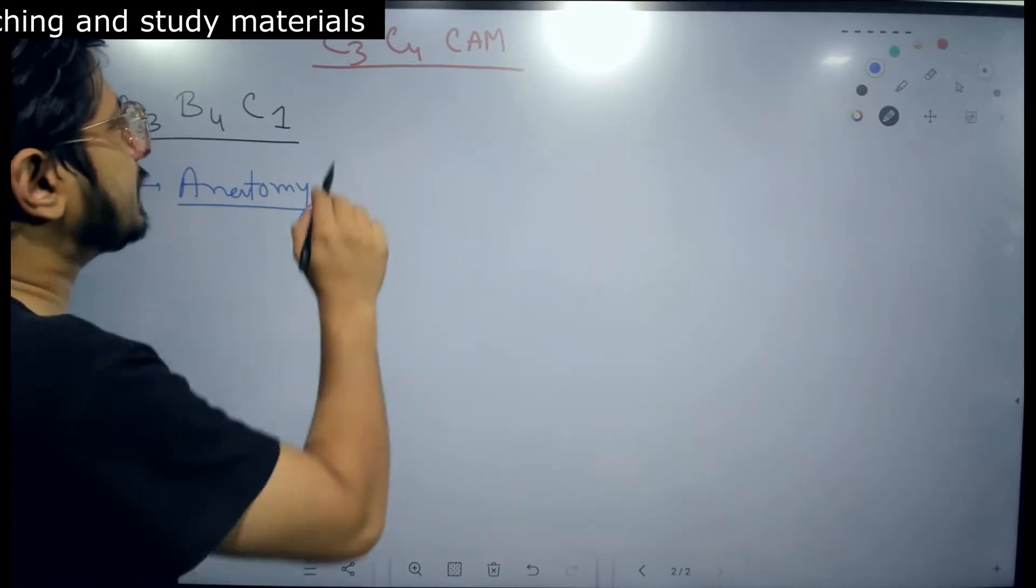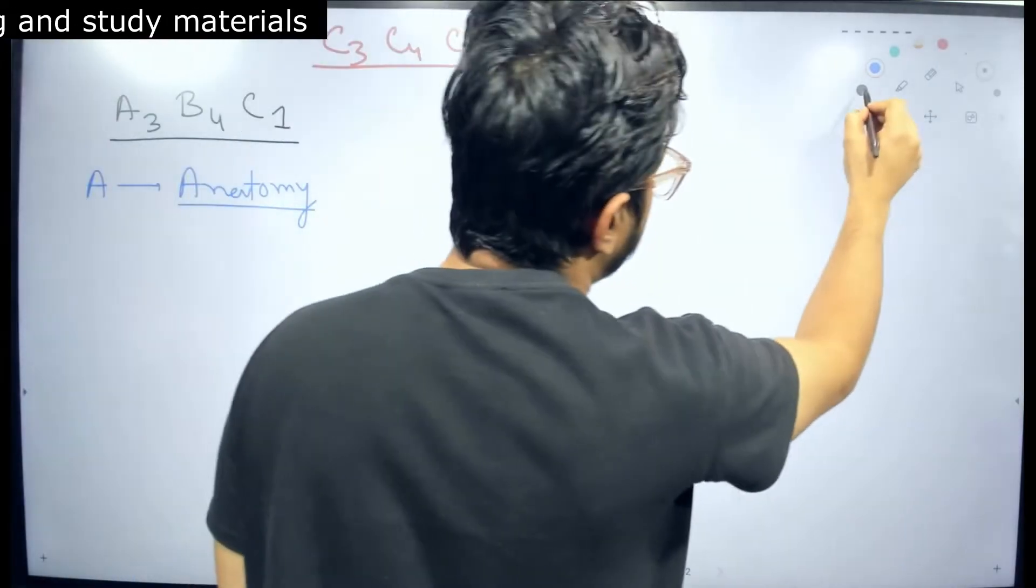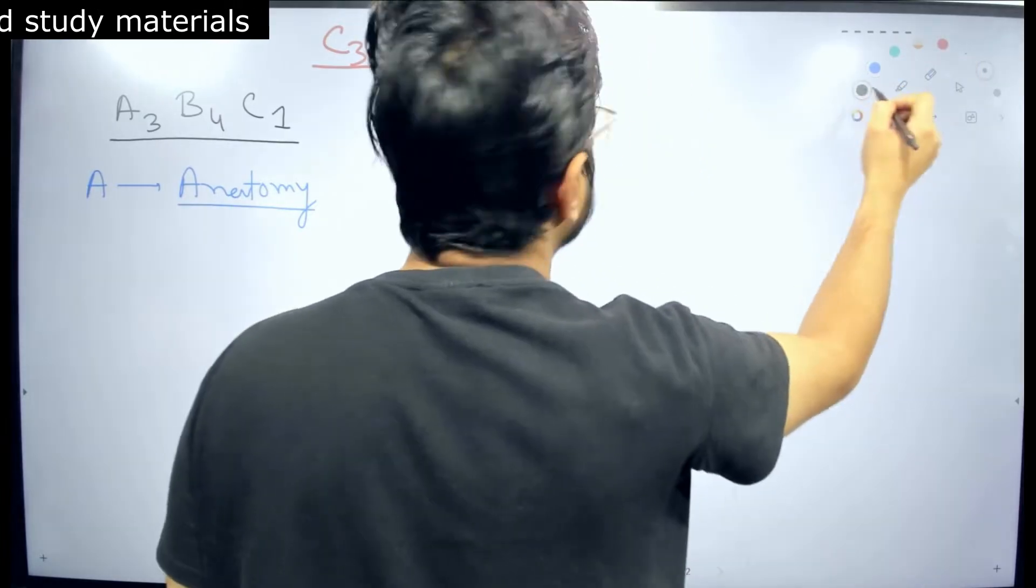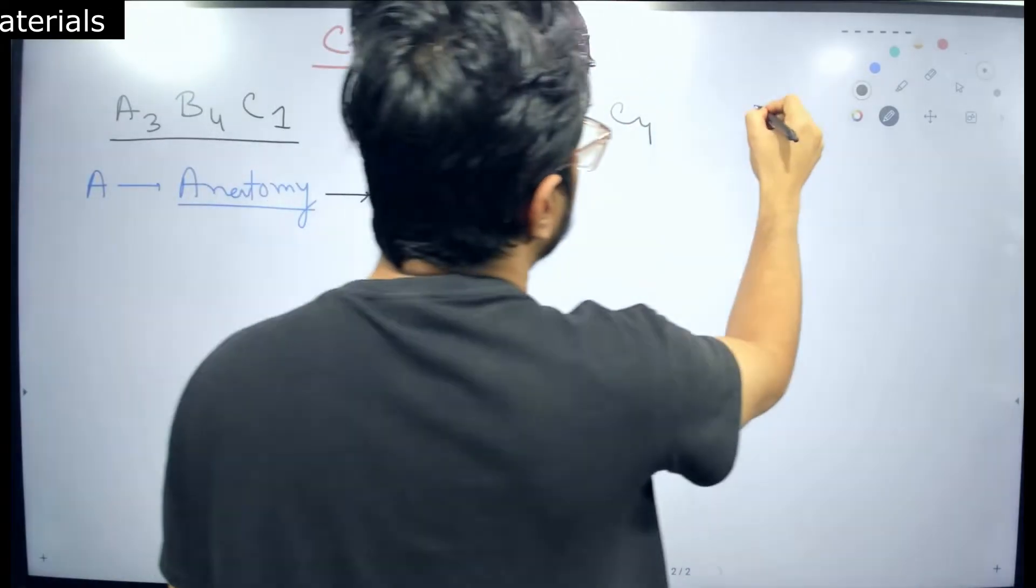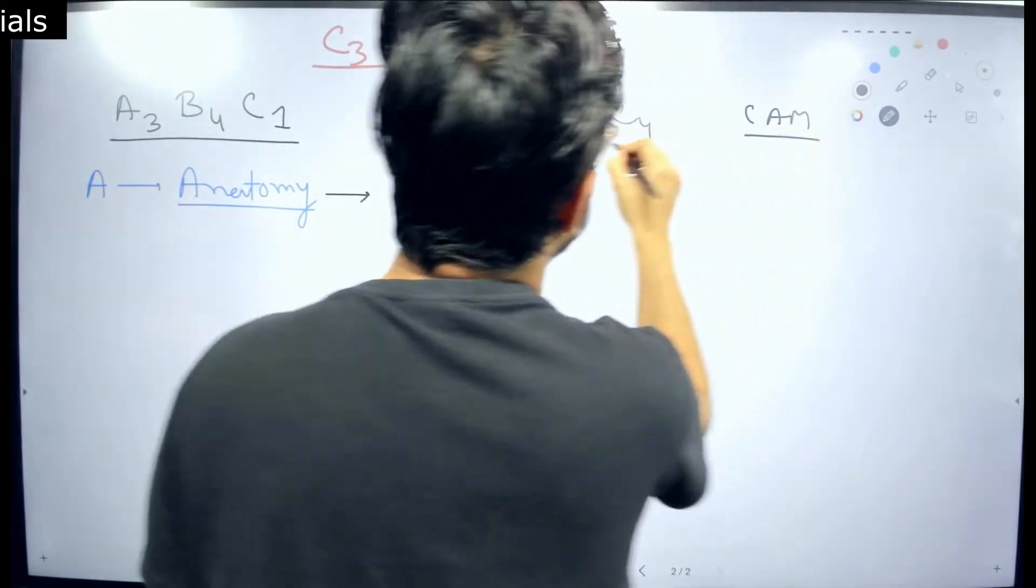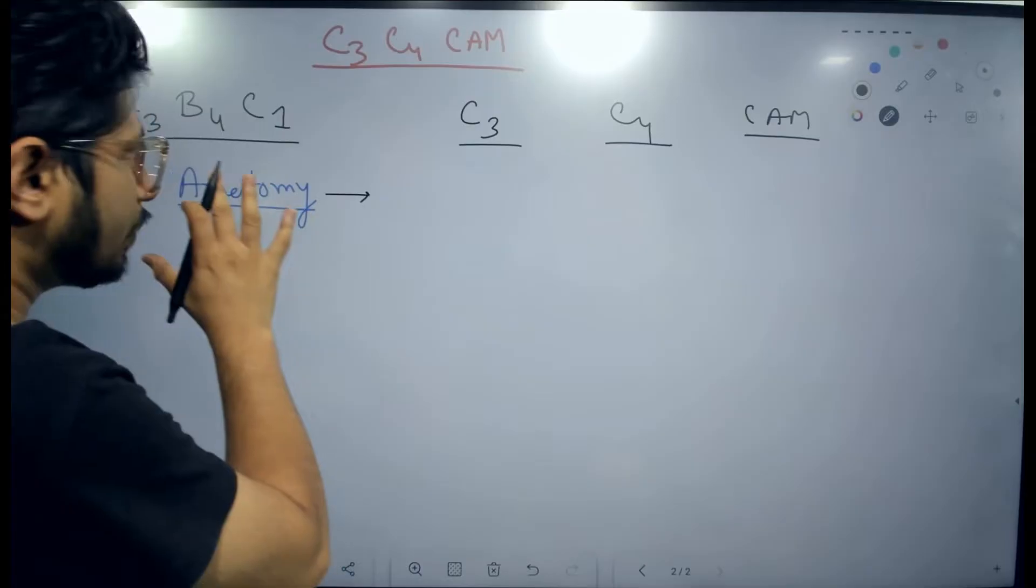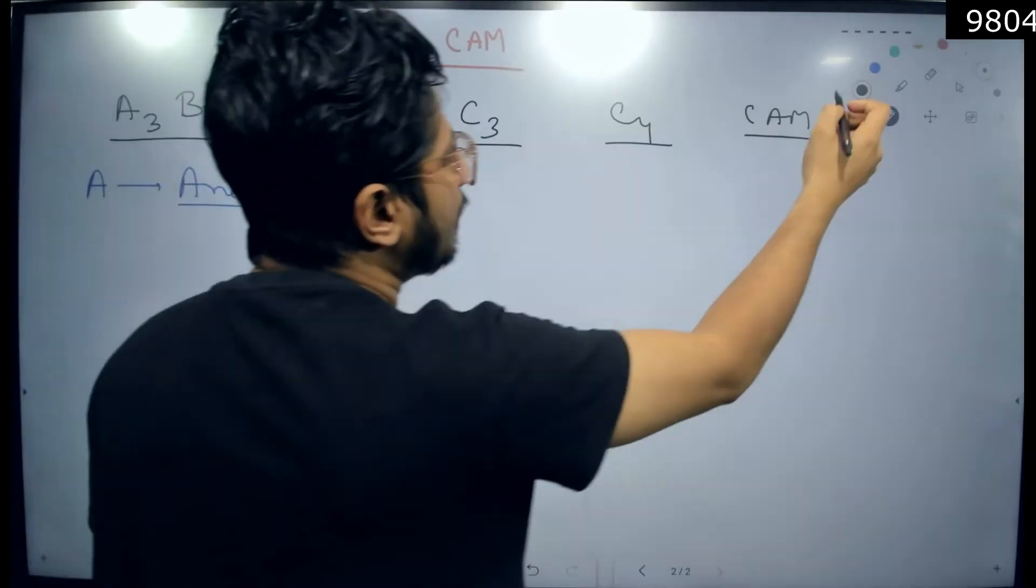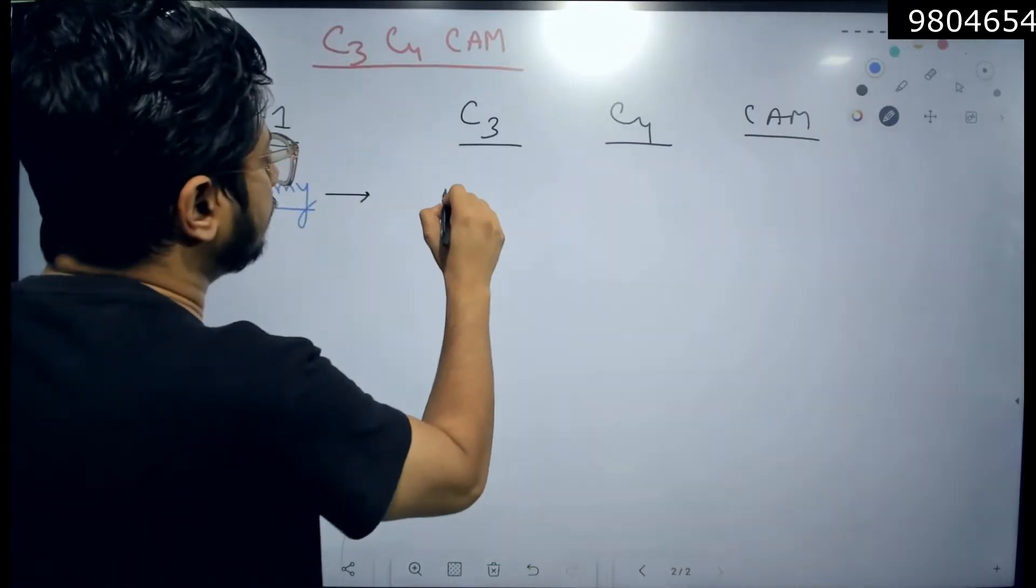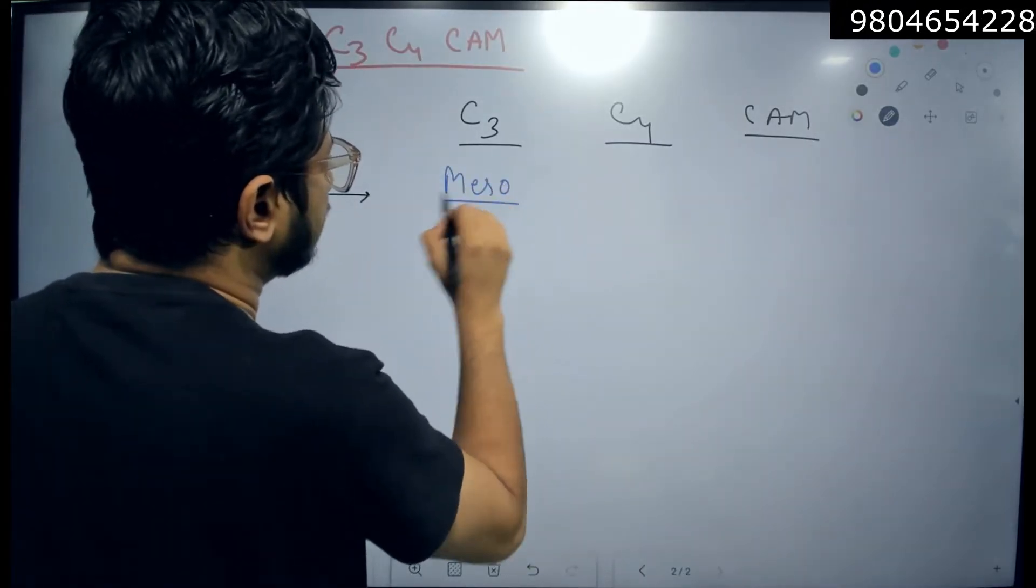So the anatomy means basically between C3, C4 and CAM plants, what is the difference in terms of their anatomy and we can easily find this. So we have C3, let's write C4, let's write CAM. How can we draw the difference between the three?